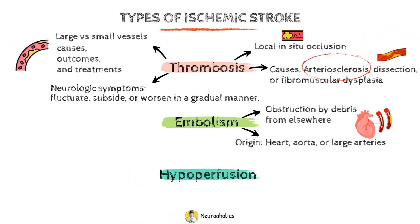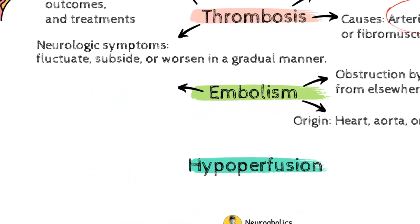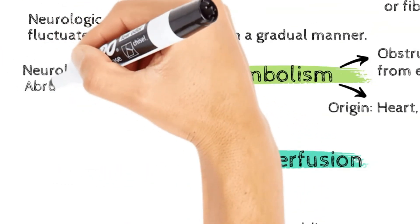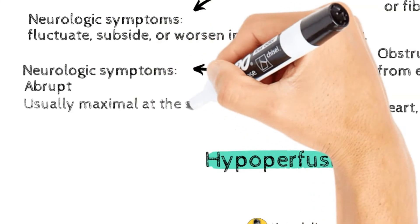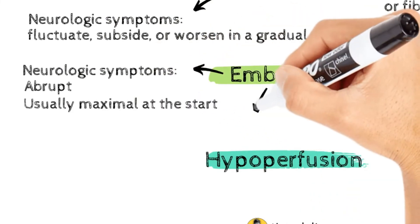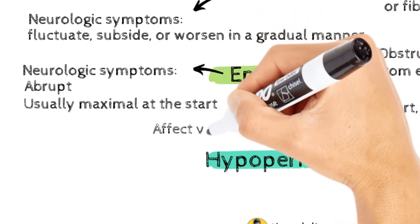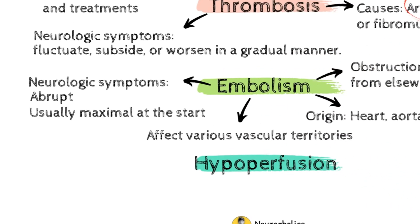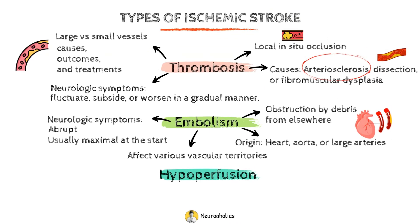The embolus suddenly blocks the recipient's site so that the onset of symptoms is abrupt and usually maximal at the start. Unlike thrombosis, various locations within distinct vascular territories may be affected when the source is the heart, such as the left atrial appendage or left ventricular thrombus, or aorta.